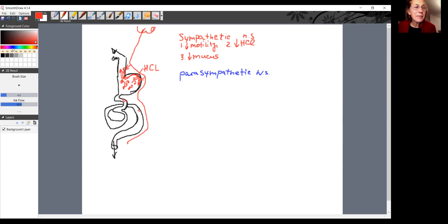Now, parasympathetic system does the opposite. So, it will increase motility, increase production of mucus, and increase production of hydrochloric acid.